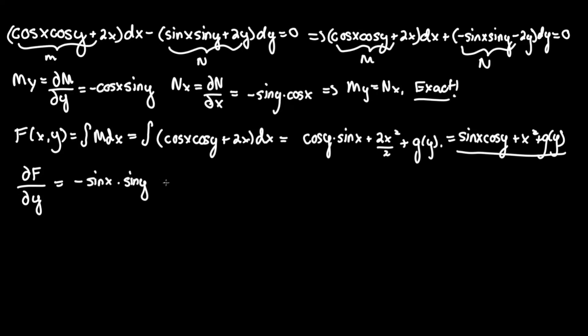Plus zero for the x squared, plus g prime of y, or the derivative of g of y. And this is equivalent to N, which is equivalent to, as we found over here, negative sine x sine y minus 2y. So let's cancel out the negative sine x sine y to isolate for g prime of y. And we are left with only g prime of y equals negative 2y.